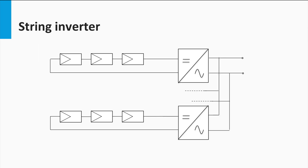Then we have the string inverter concept, which seeks to strike a balance between the module level inverter and the central inverter topologies. The string inverter topology is more resilient to mismatch than the central inverter, because each string is independently operated at its maximum power point, guaranteeing a higher energy yield. String inverters are smaller than central inverters. However, the implementation is more complex than the module inverter. Also, partial shading will have a greater influence over the string inverter topology than over the microinverter topology.